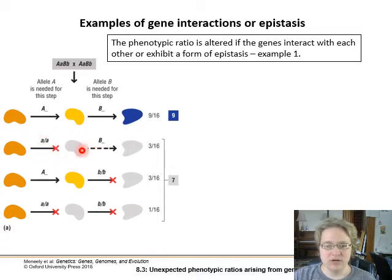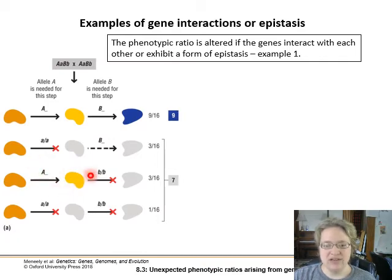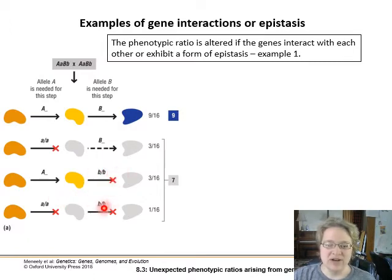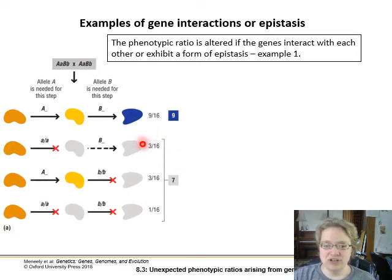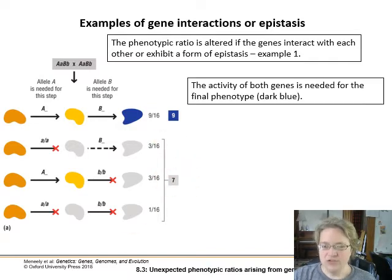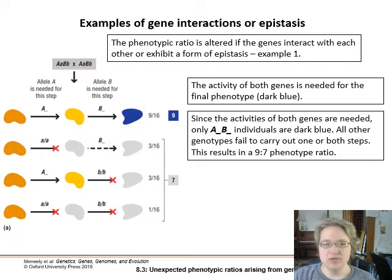If we have the recessive allele at the first step, we don't get our yellow pigment, and therefore the functional enzyme B can't do anything. Similarly, if we have the functional enzyme for the first step and get to yellow, but then nothing happens, it doesn't reach the end of the pathway. Finally, if neither enzyme works, nothing happens. Although these are different genotypes, they all get pooled to the same phenotype.